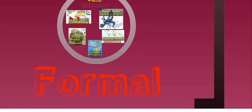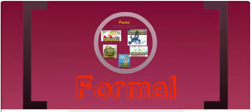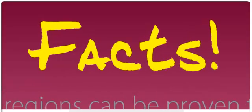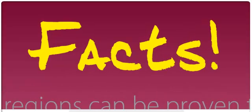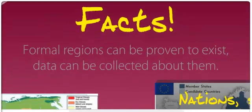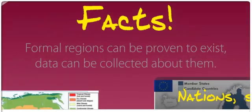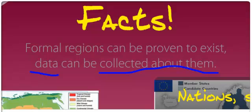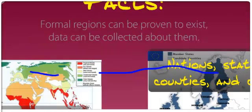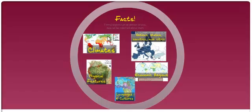Let's talk about formal first. Formal regions are all about facts — they can be proven to exist. How do you prove that a region exists? Go and collect data about it. If you can collect data about it, you can prove that it's there. So let's take a look at some of these places that can be proven to exist.